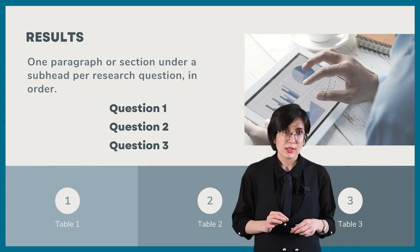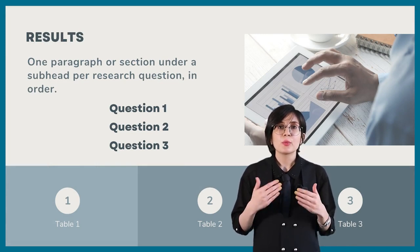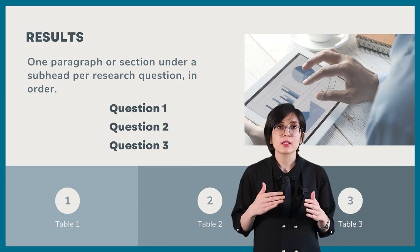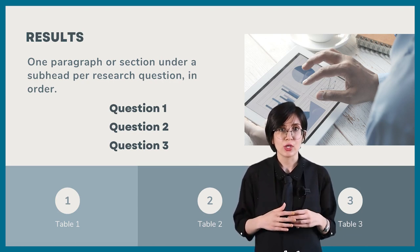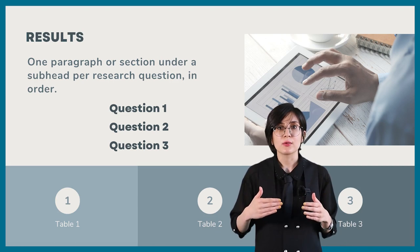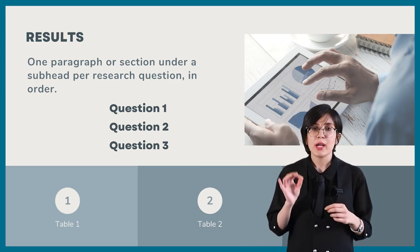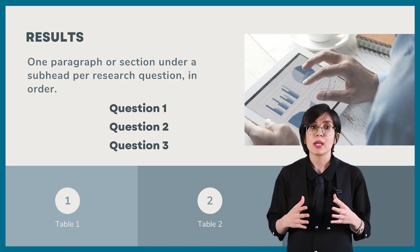The first section is the results. First of all, you need to prepare your tables. Each table would be better to represent the findings for a single research question in the same order they were listed.